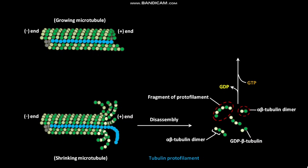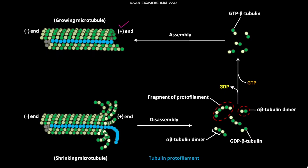As a result, alpha-beta tubulin dimers are formed in which each beta tubulin is bound to one GTP. The beta tubulin in its GTP-bound state is called GTP-beta tubulin. These alpha-beta tubulin dimers having a GTP-beta tubulin each then assemble at the plus end of a growing microtubule.